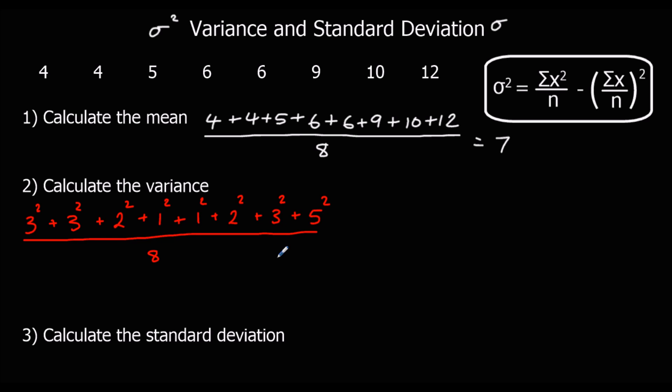This method works when we've only got a few numbers — not much data. We look at the distance each number is away from the mean, square it, and divide by how many numbers there are. Typing that into the calculator gives us a variance of 7.75.